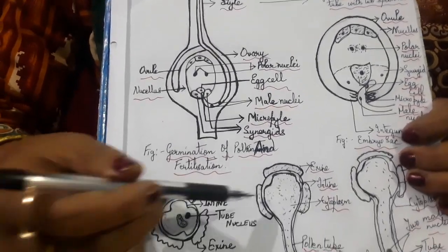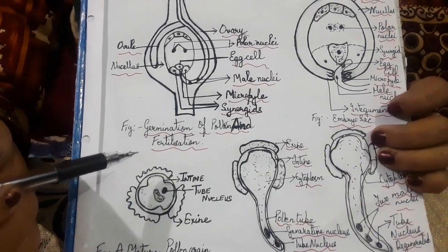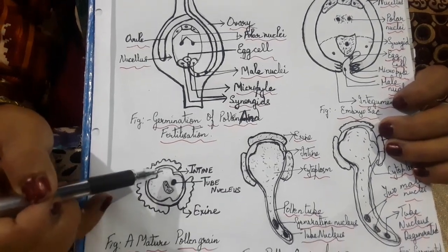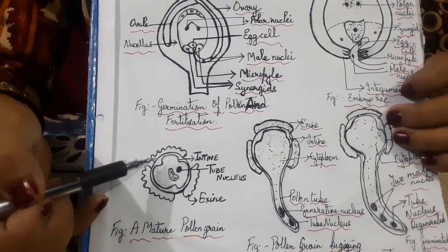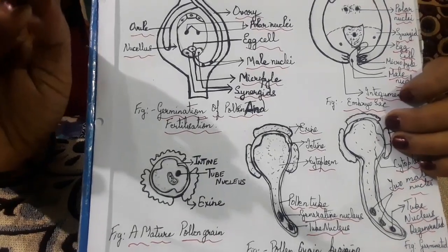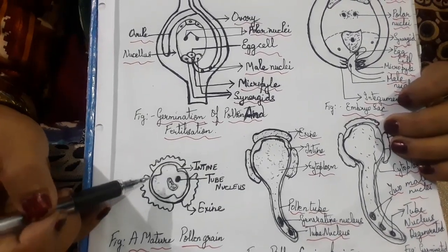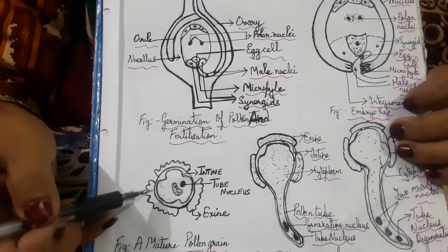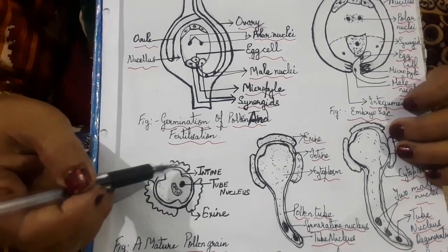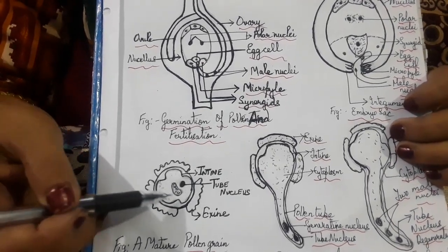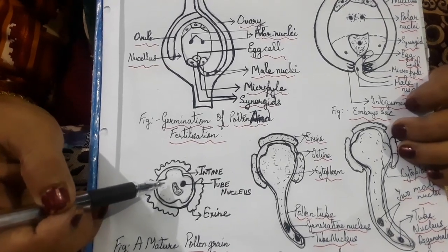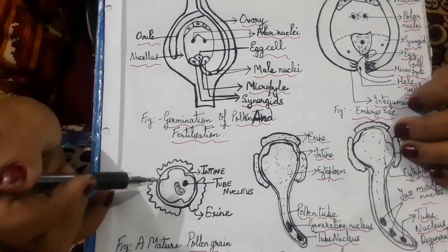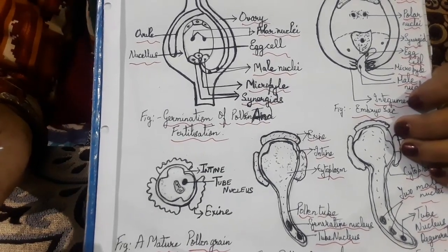Before moving further, we shall discuss about the pollen grain. The pollen grain is the male gamete. This first diagram shows the structure of a pollen grain — a resting pollen grain. It has an outer surface which is not continuous, having a spiny structure called exine. The inner layer is called entine; it is continuous and has cytoplasm and nucleus. The nucleus is of two types: tube nucleus and generative nucleus.